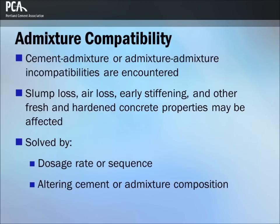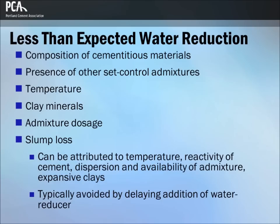Some incompatibility issues may be solved by modifying the composition of the cement or admixture. If the water reduction achieved using an admixture is less than expected based on previous experience, this may be caused by the composition of the cementitious materials, the presence of other set control admixtures, the temperature of the concrete, clay minerals in the aggregates, and the dose of the admixture itself.